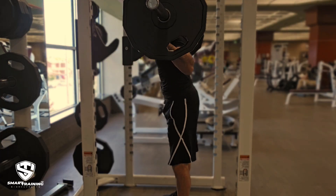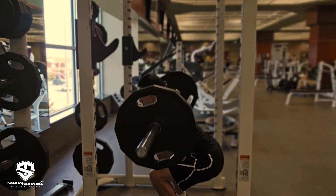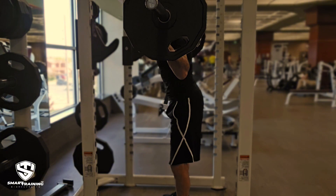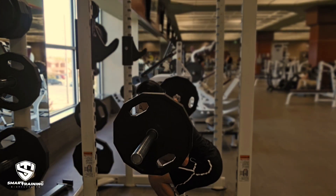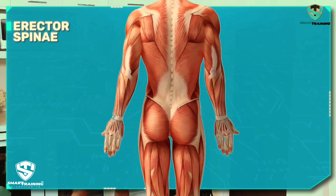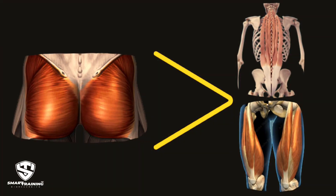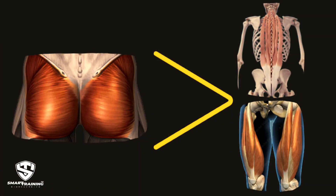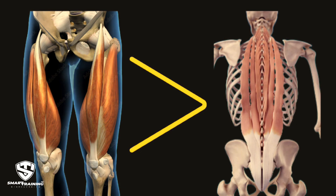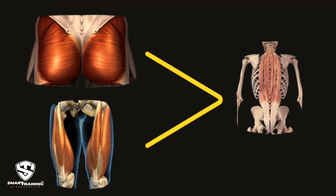If you're using 100 pounds, your quads are not loaded with 100 pounds — there are other muscles involved: the erector spinae and the glutes. Each of these muscles is loaded to a degree. It's also important to know that each of these three muscles has a strength capacity. The glute strength capacity is superior to the quads, and the quads are superior to the erector spinae.